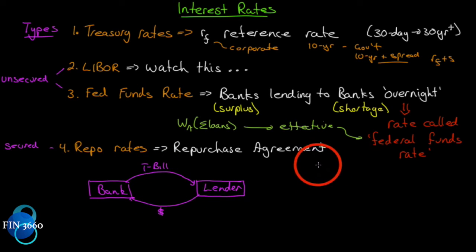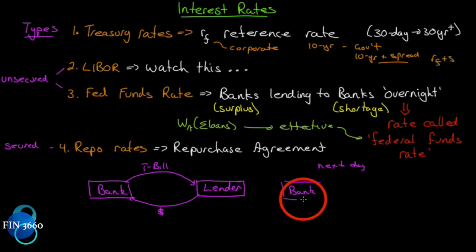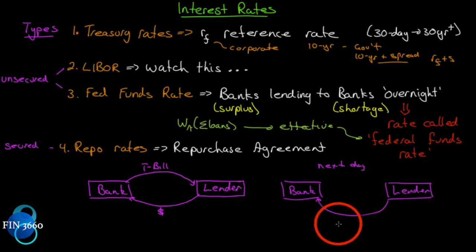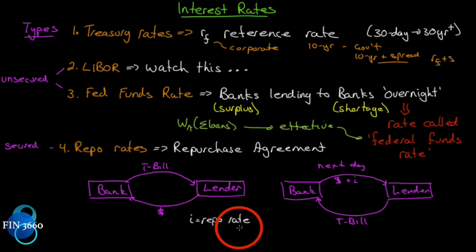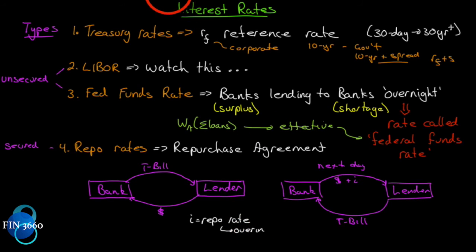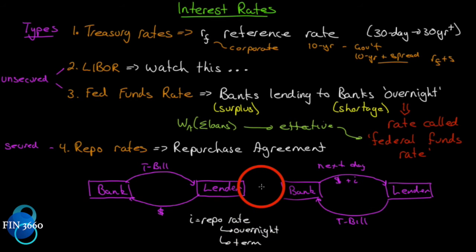The next day it is reversed. The lender will give back the T-bill, and the bank will pay the lender the money it borrowed plus an interest rate. This interest rate is called the repo rate. You can have a repo rate for overnight — the more common one — or for a longer period of time, which is called a term repo.